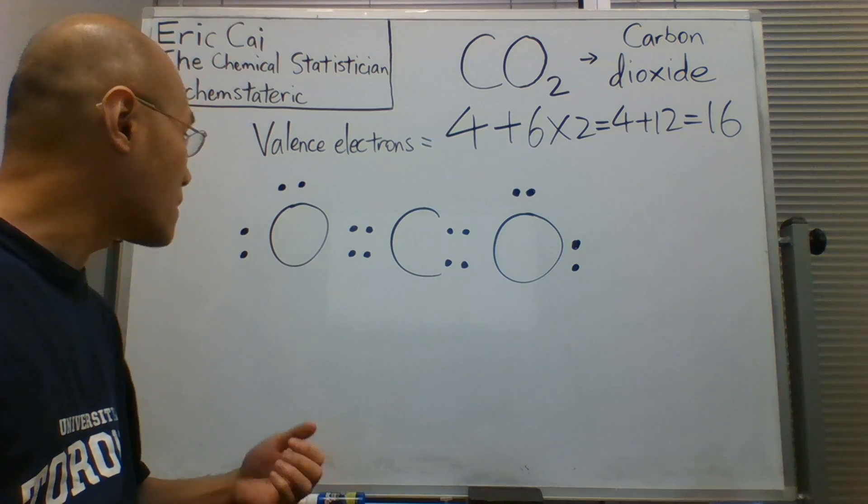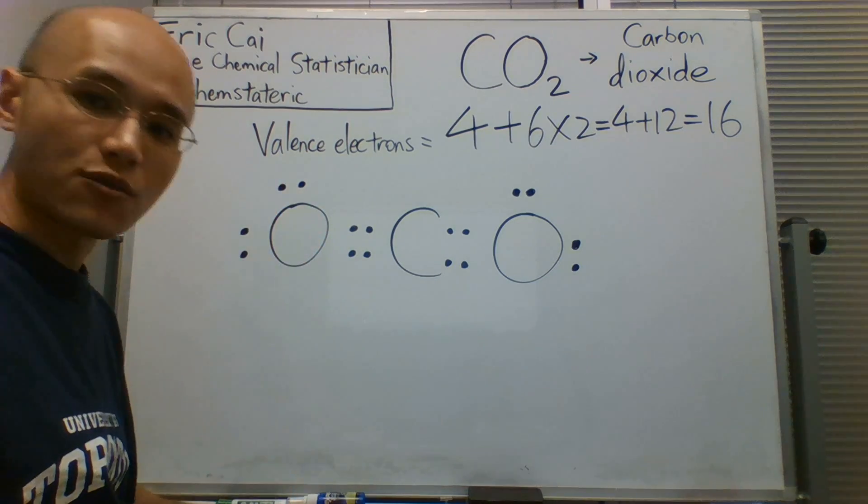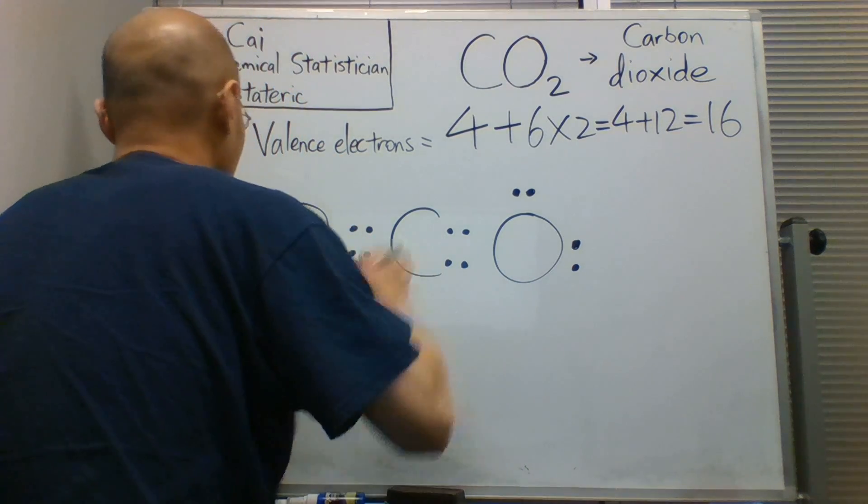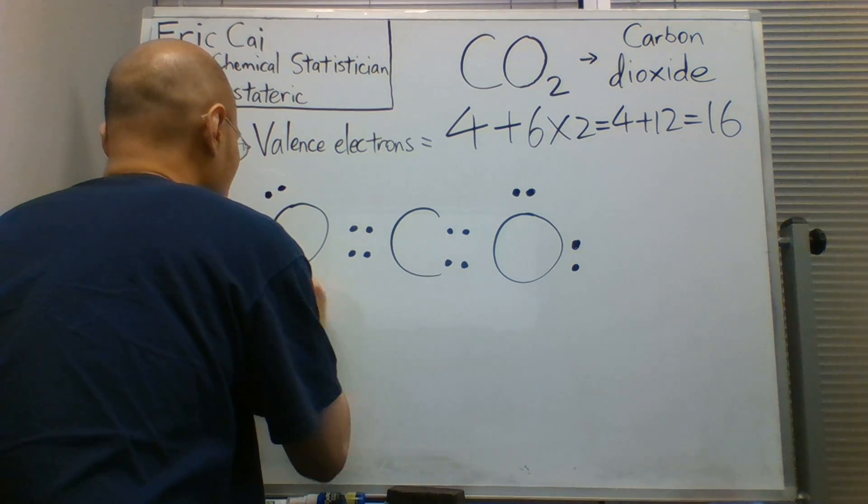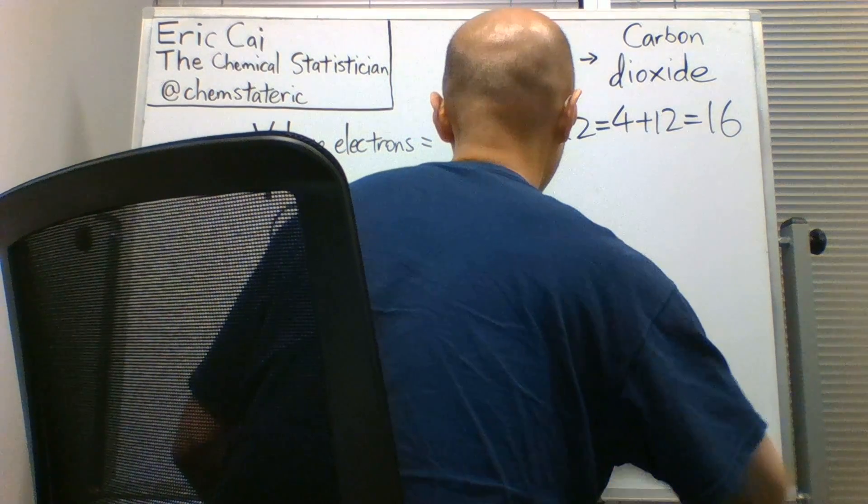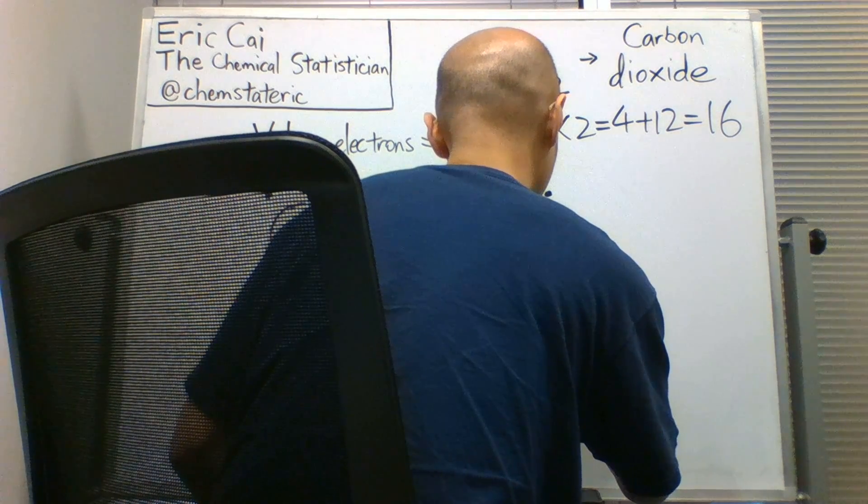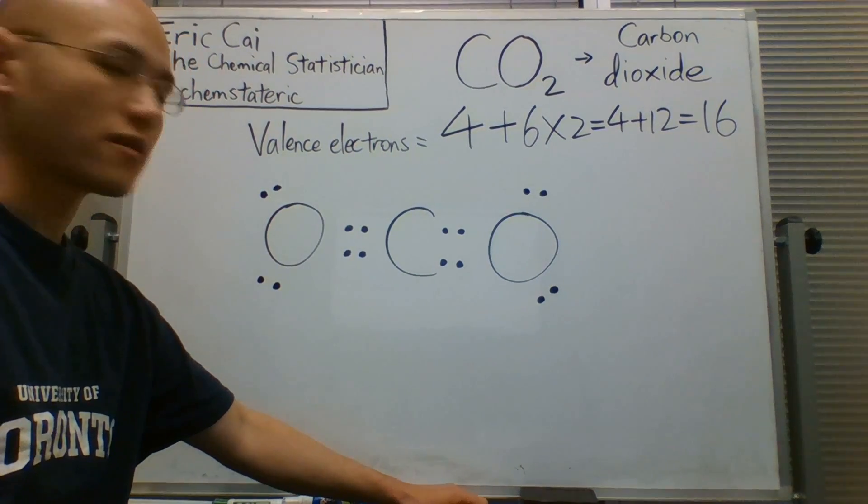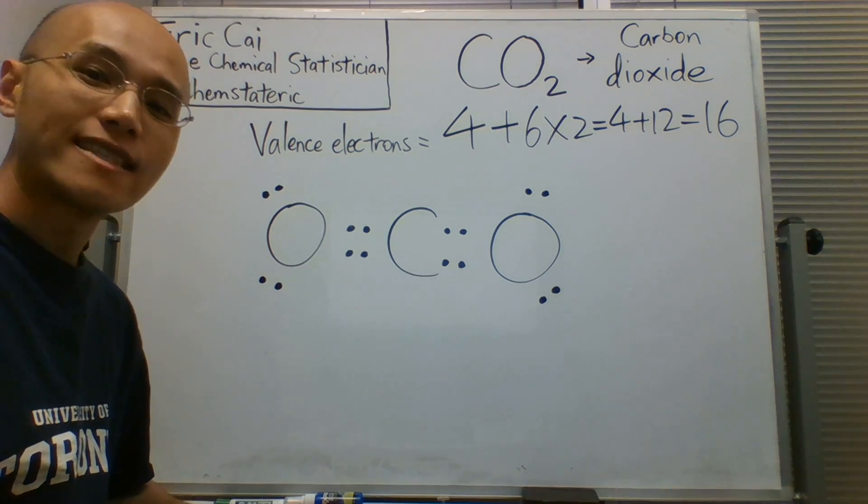And by an electron domain, I mean either electrons in a bond or electrons in a lone pair of electrons. So, we will draw those remaining electrons. And that is the Lewis dot structure for carbon dioxide.